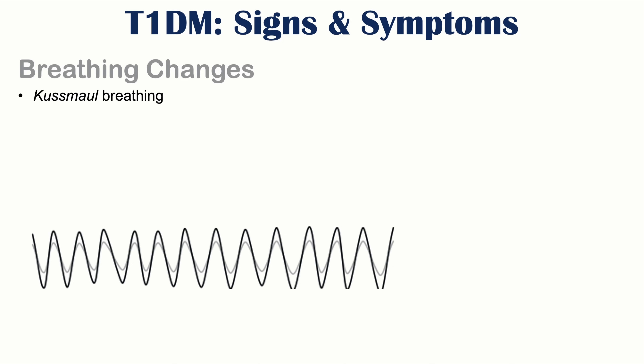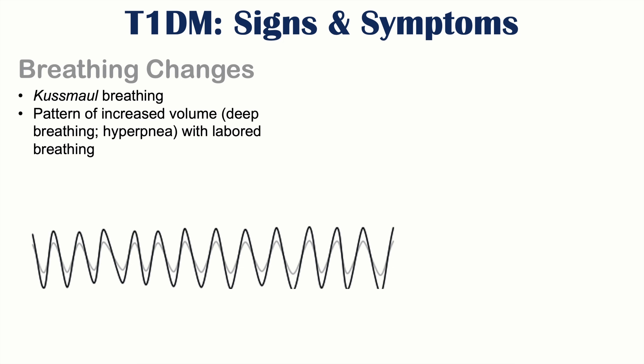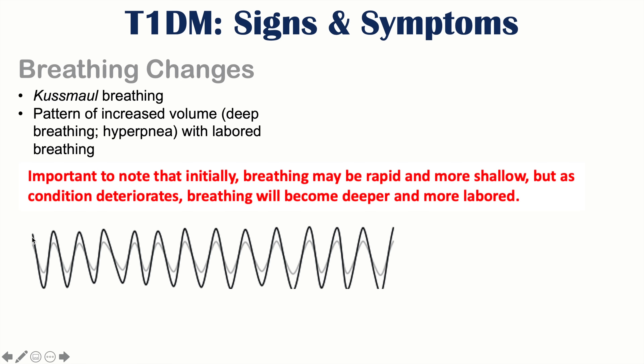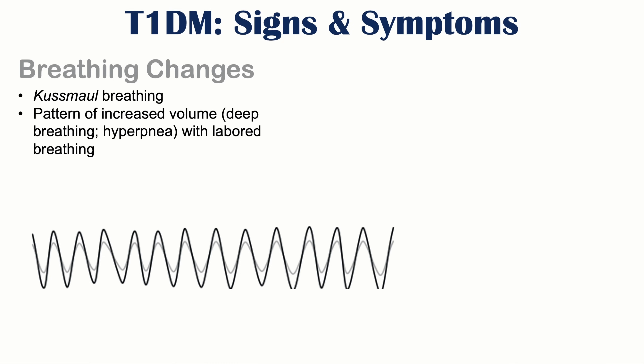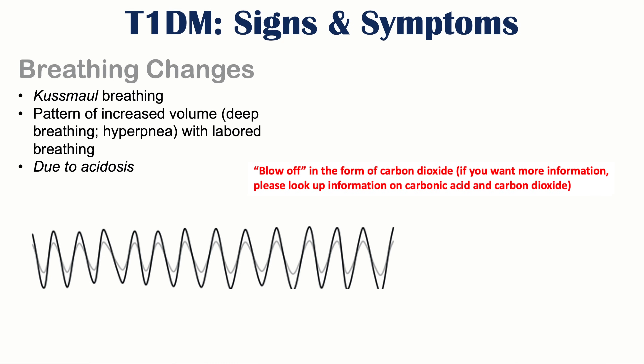Breathing changes can also occur in late diabetic ketoacidosis, called Kussmaul breathing. This is a pattern of increased volumes of breath — deep breathing or hyperpnea — often labored. Compared to normal tidal breathing, Kussmaul breathing shows increased volume of exhalation and inhalation. The reason for this is that the patient is trying to blow off acid, so this breathing change is due to acidosis.